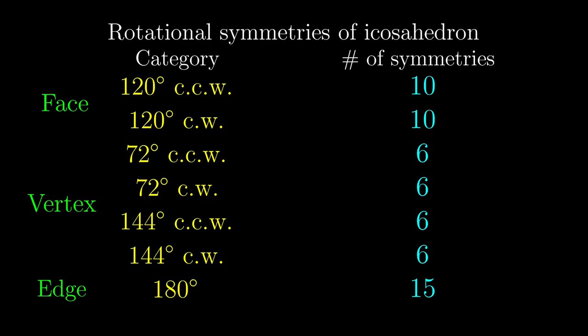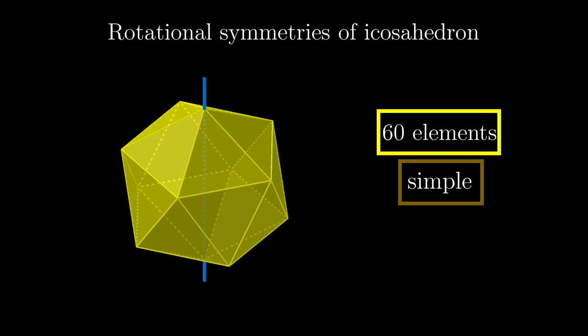Unlike the other categories, we don't have to distinguish between clockwise and anticlockwise rotations. These just add up to 59, because we also have to consider the identity symmetry as well.